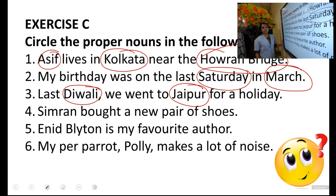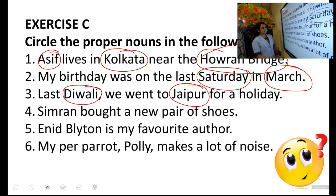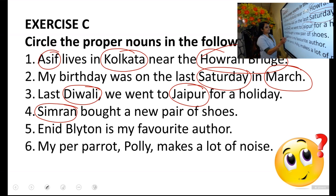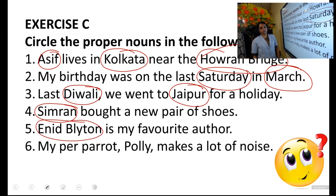Next: Simran bought a new pair of shoes. The proper noun here is Simran — the name of a girl. Then: Enid Blyton is my favourite author. The proper noun is Enid Blyton — the particular name given to that author.